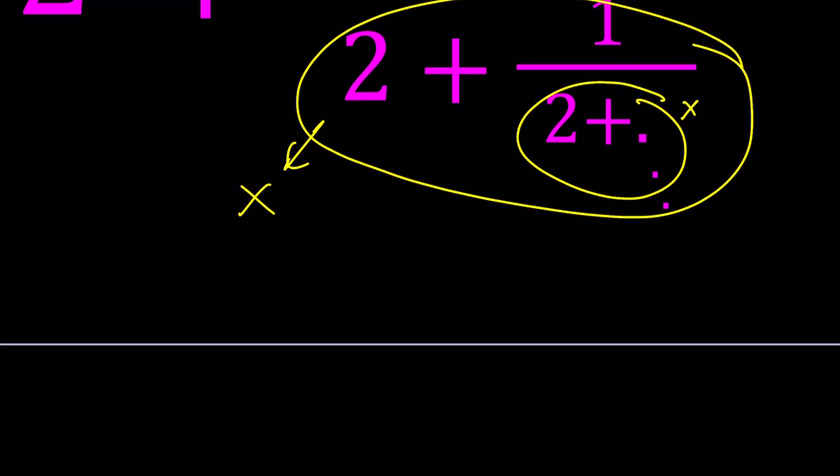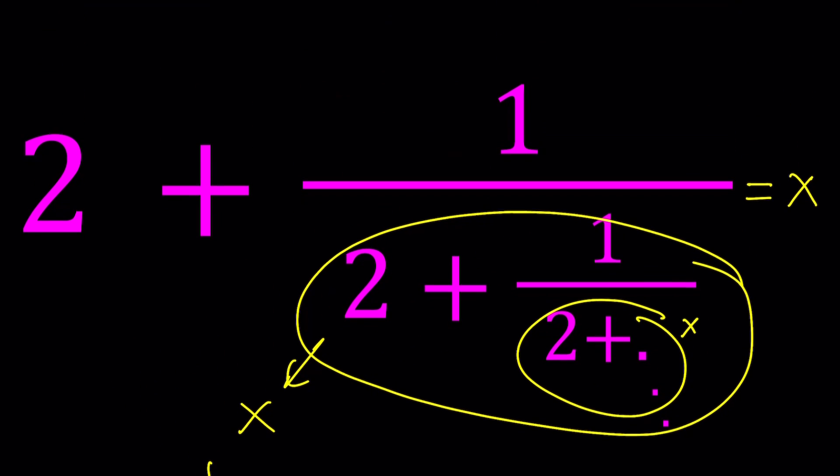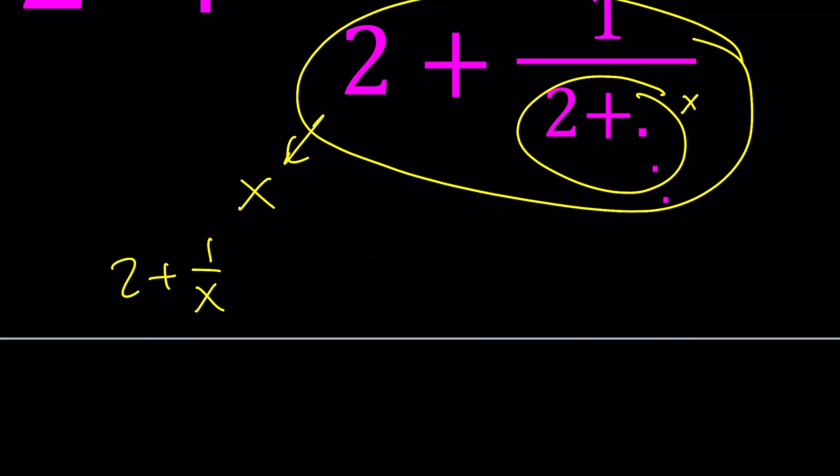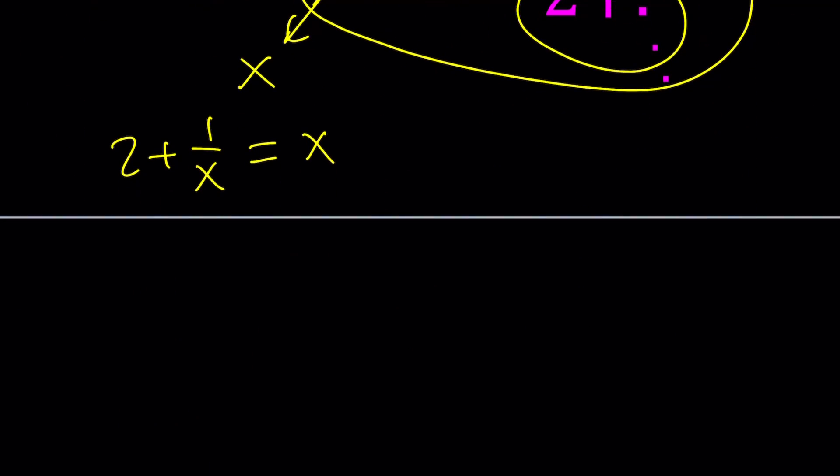And solve for x. So from here we get 2 plus 1 over x equals x. Looks fairly simple, right? And then multiply everything by x. 2x plus 1 equals x squared. And now we want to put everything on the same side. x squared minus 2x minus 1 equals 0. And now let's go ahead and solve this as a quadratic.